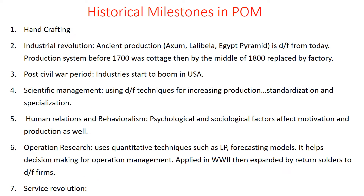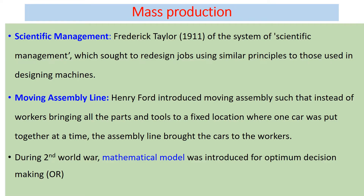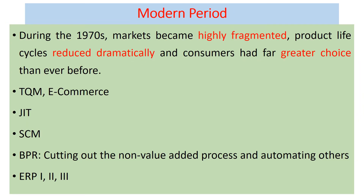These are the important milestones for operation management. Just after craft manufacturing, mass production started and scientific management played an important role. Scientific management, developed by Frederick Taylor, played an important role in mass production. The modern period operation management, also advanced by Henry Ford, played an important role in mass production. Modern-period operation management topics include total quality management, e-commerce, just-in-time, supply chain management, BPR, and enterprise resource management.